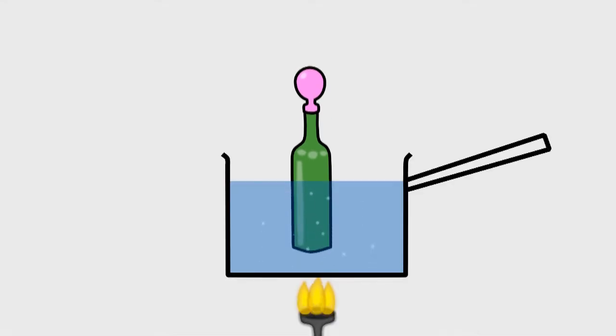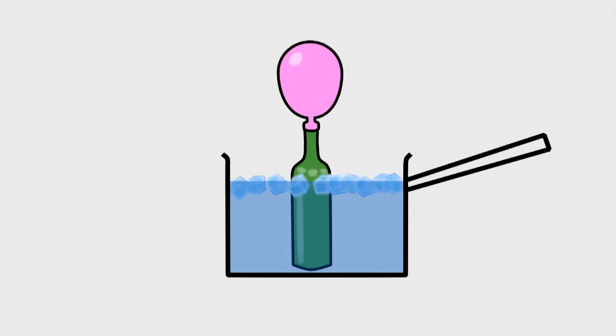Stretch a balloon over the mouth of a bottle and put the bottle in a pot of hot water. As the air inside the bottle heats up, it expands, pushing out against the inner walls of the balloon. A pot of cold water has the opposite effect, making the balloon shrink.